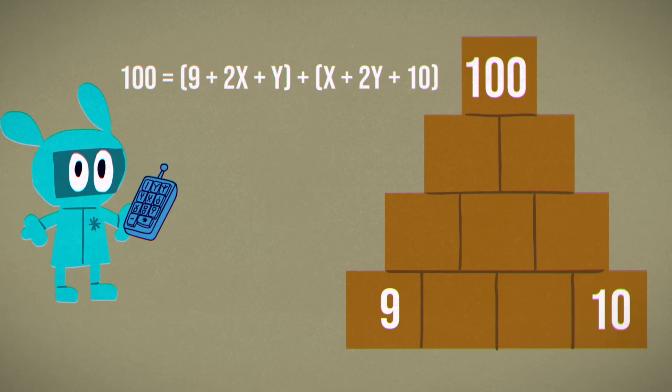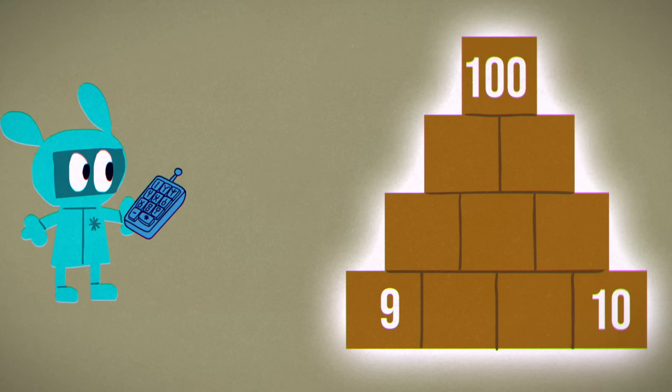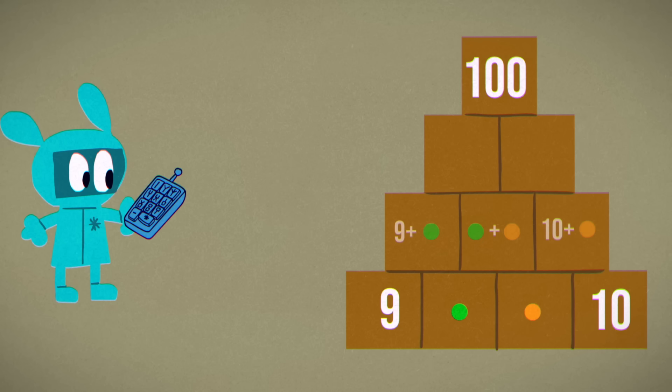You could write out the algebra again, but here's a more visual approach. Sketch a pyramid and enter the known numbers. Between the 9 and the 10, you can put colored dots to represent the two unknowns at the bottom. Working your way up the pyramid and drawing the sums as you go will reveal that 100 equals 19 plus 3 green dots plus 3 orange dots.